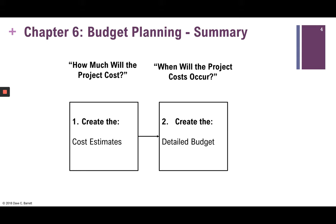Two main questions: how much will the project cost? — the result is the creation of the cost estimates. And the second question, when will the project costs occur? — results in the creation of the detailed budget. So two main deliverables here: cost estimates and detailed budget.